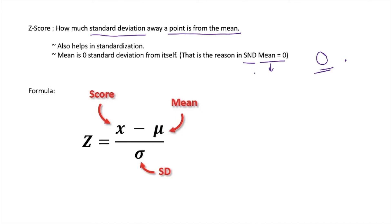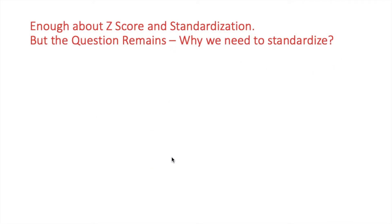This is also one of the questions we get in interviews: why is the standard normal distribution mean zero? Keep this in mind. The Z-score formula is given as Z = (X − μ) / σ, where X is the point we are talking about, μ is the mean, and σ is the standard deviation. Now the question still remains: why do we need to standardize?